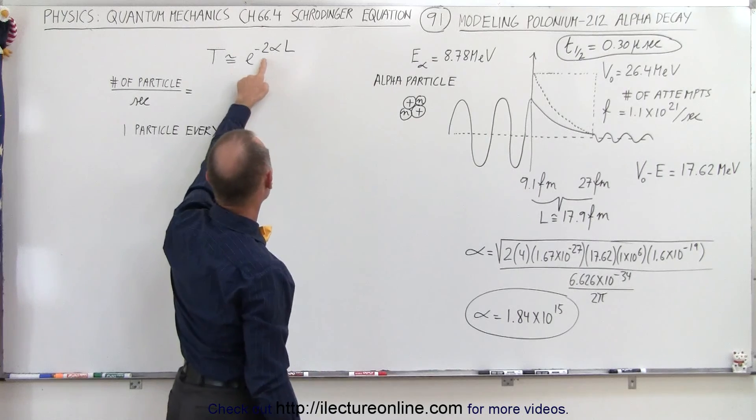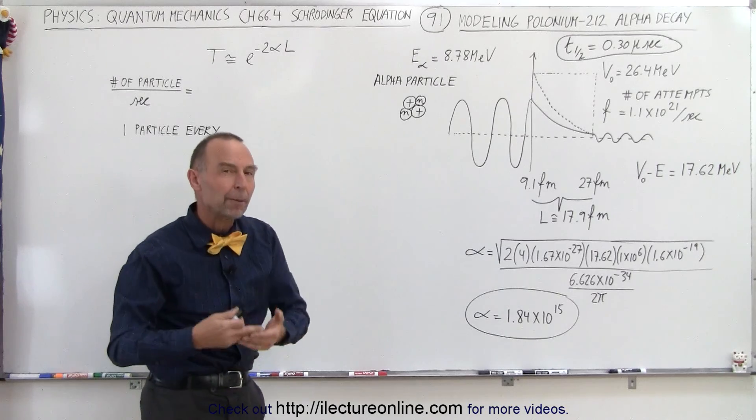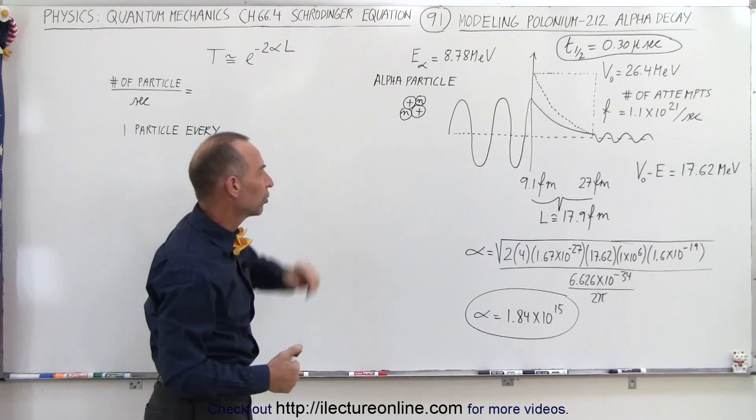Which is a part of the exponent where we're trying to calculate the transmission coefficient, which is also the probability of the particle making it through the barrier.